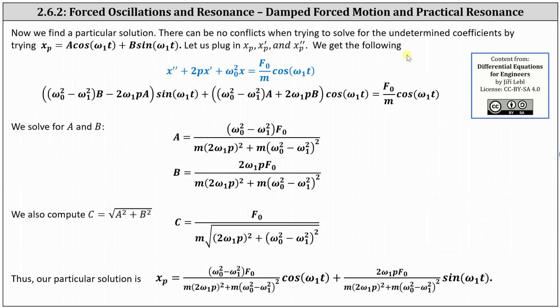From here, there's quite a few steps missing. We substitute X sub P, X sub P prime, and X sub P double prime into the differential equation and simplify, which results in the equation shown here.